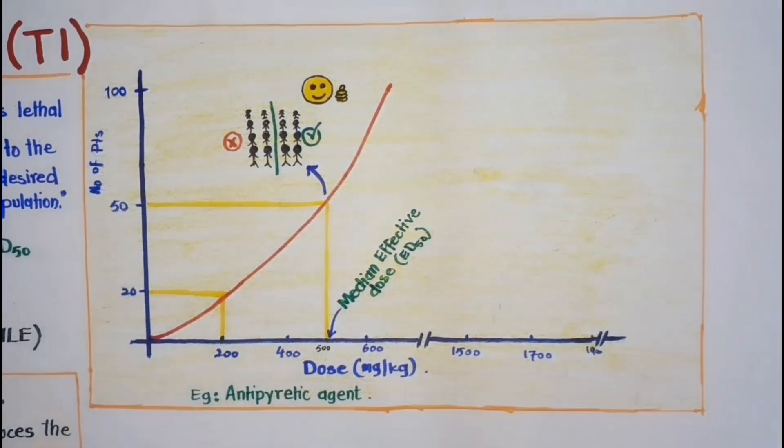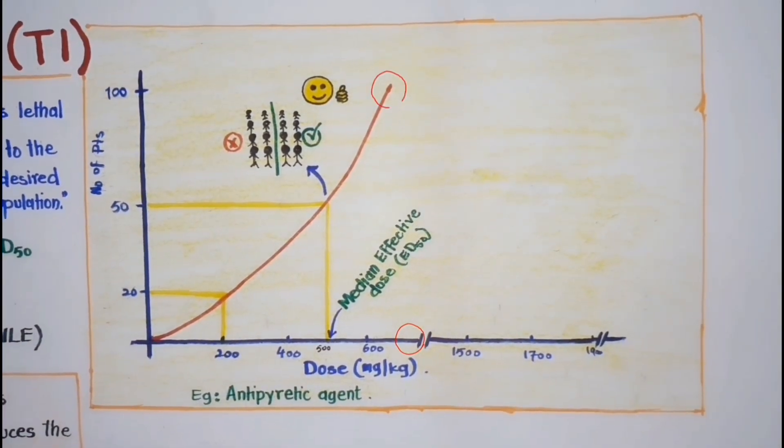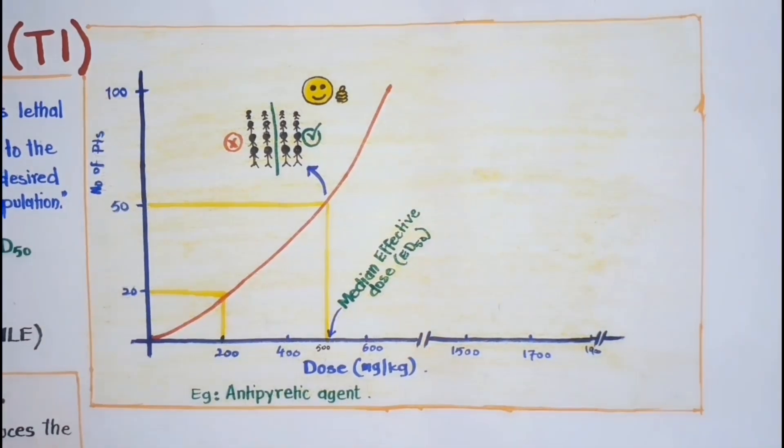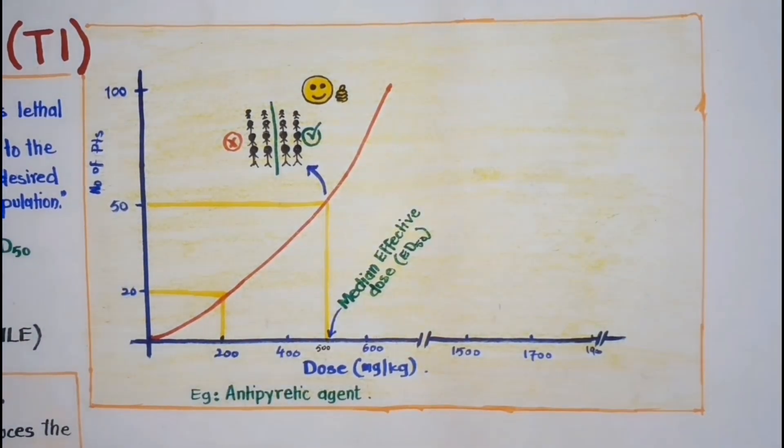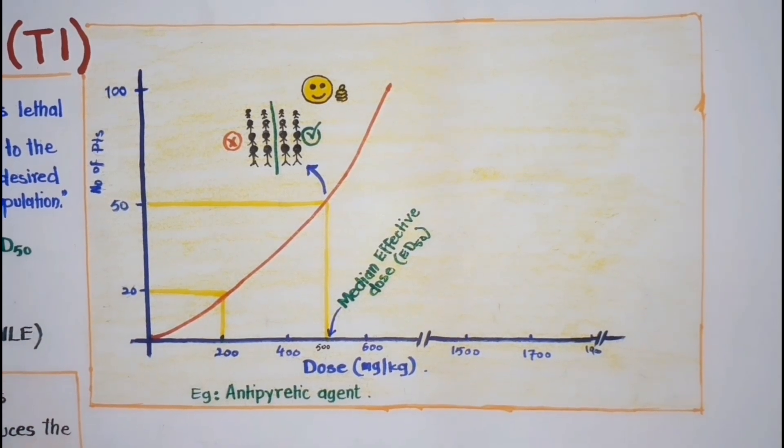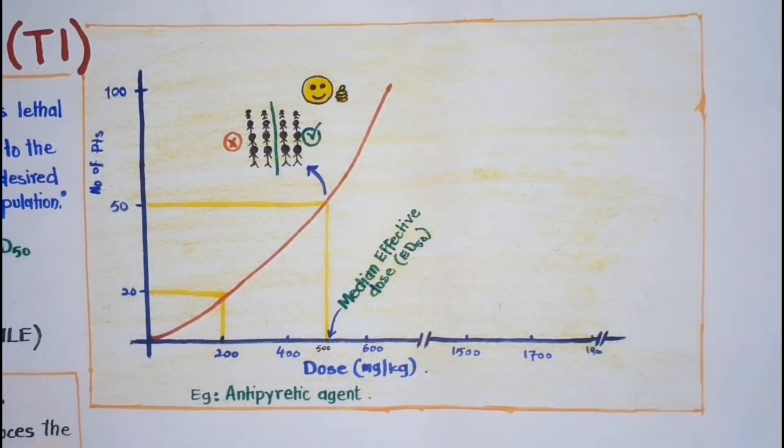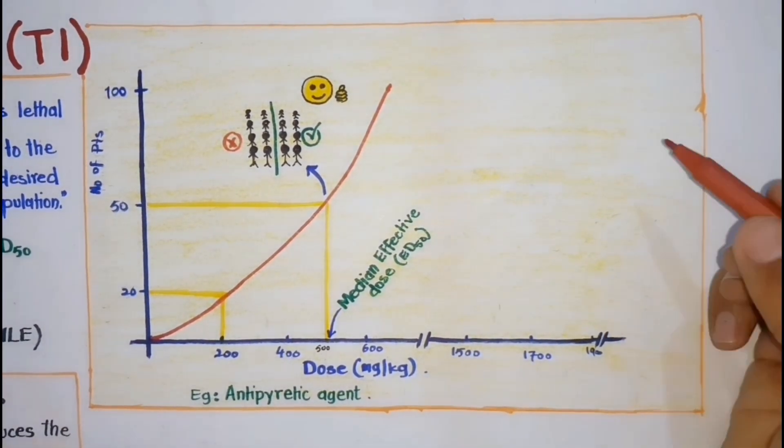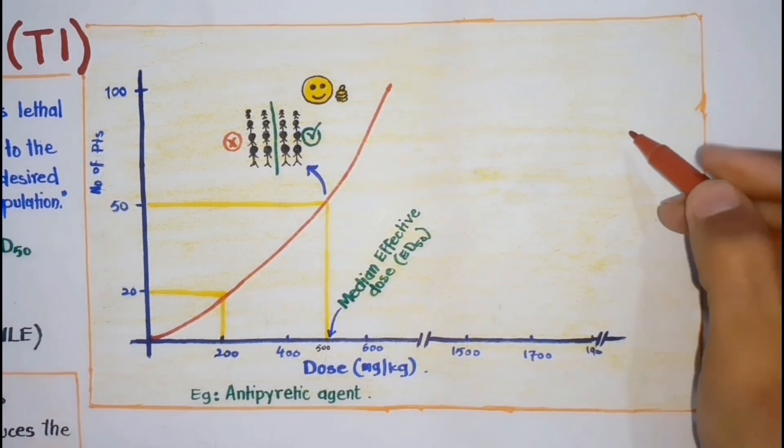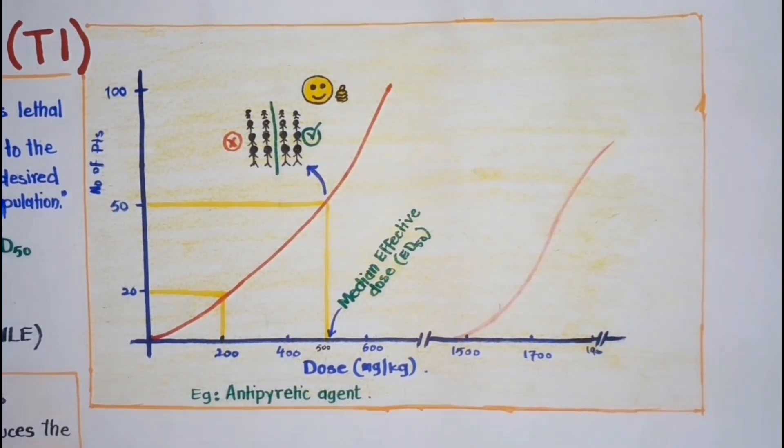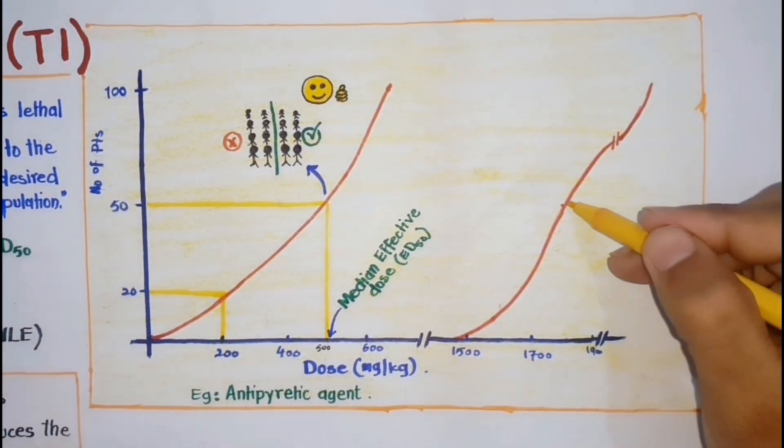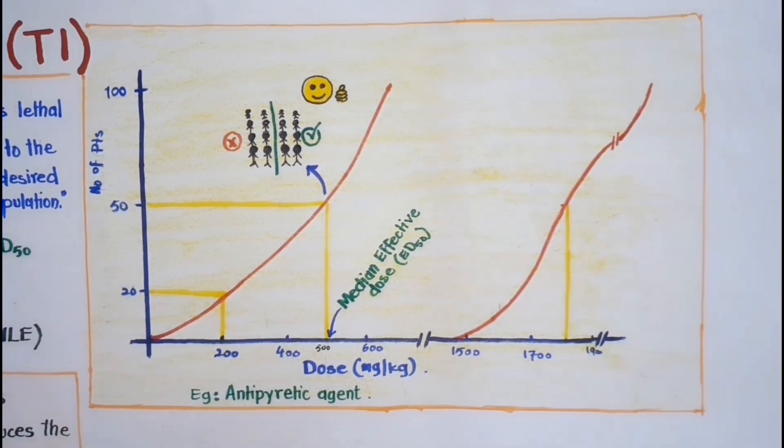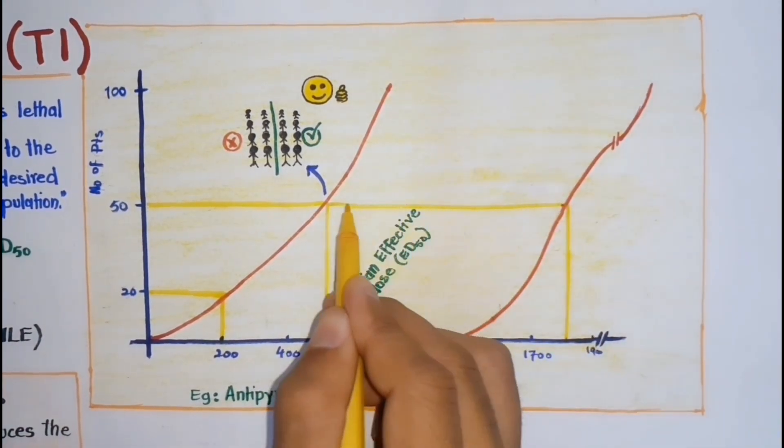And increasing the dose until on 800 mg per kg antipyretic effect was noted in 99 subjects. Besides this, if now we are continuously increasing this dose and then let's suppose on 1500 mg some toxic effects started in some subjects until we noticed that on 1800 mg, 50 of our test subjects died.